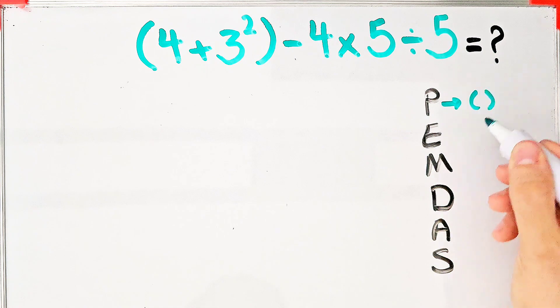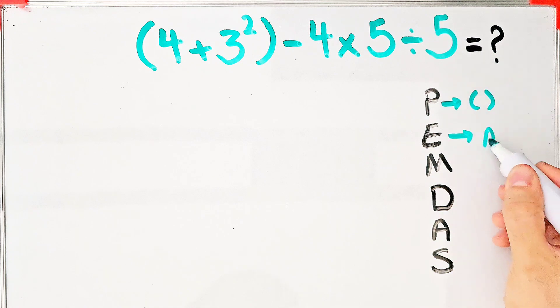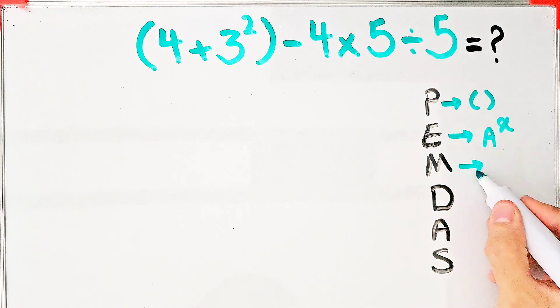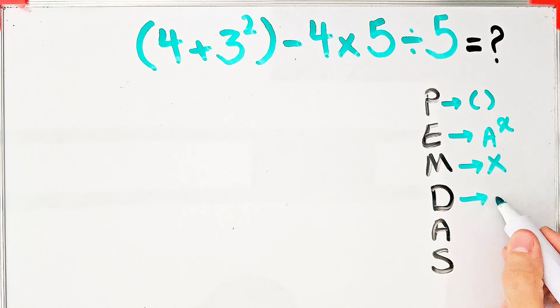P stands for parentheses, E stands for exponent, M stands for multiplication, D stands for division, A stands for addition, and S stands for subtraction.